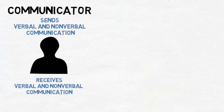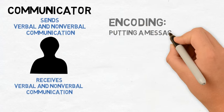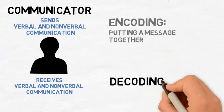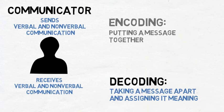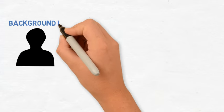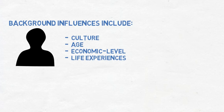When receiving information, a communicator needs to decode it and give the information meaning. Encoding is the process of putting a message together. Decoding, on the other hand, is taking a message apart and assigning it meaning. When receiving verbal and non-verbal communication, a number of factors influence how a person will perceive the messages received. A communicator's background, including culture, age, economic level, and life experiences, all influence how she or he communicates, and in turn, interprets communication from others during interactions.